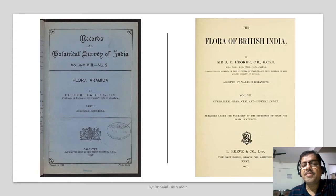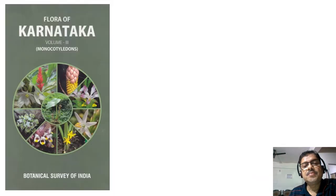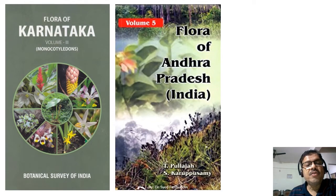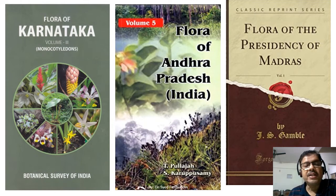Additional notable floras include: Flora of British India by Hooker; Records of Botanical Survey of India Volume 8, covering Flora of Arabia, published in 1921; Flora of Karnataka Volume 3: Monocotyledons by the Botanical Survey of India; Flora of Andhra Pradesh by T. Pullaiah and Krishnaswamy; and Flora of the Presidency of Madras by Gamble.